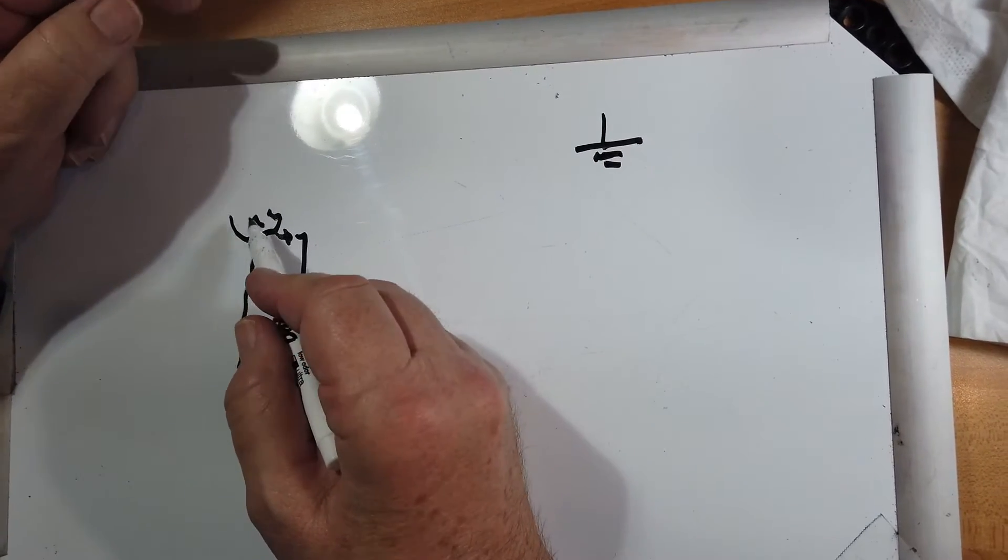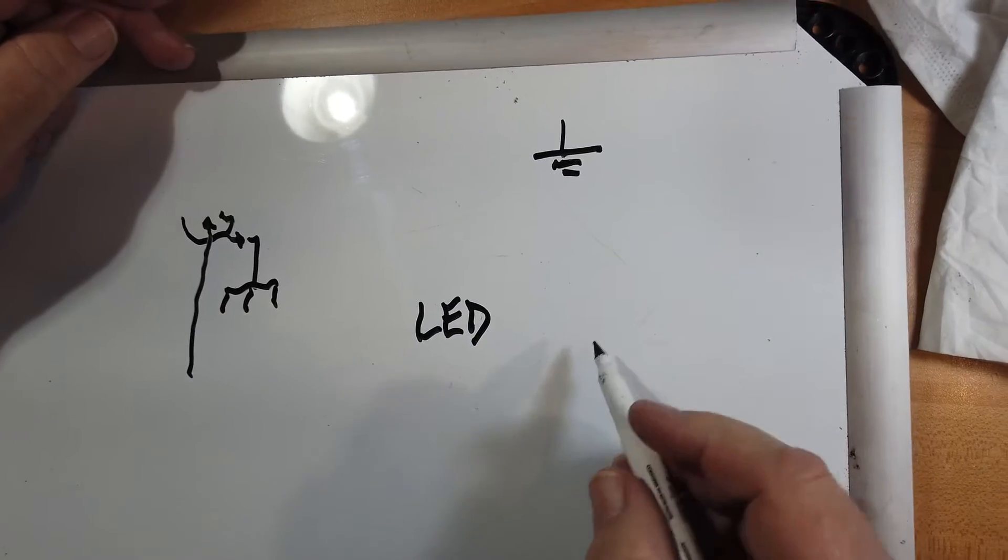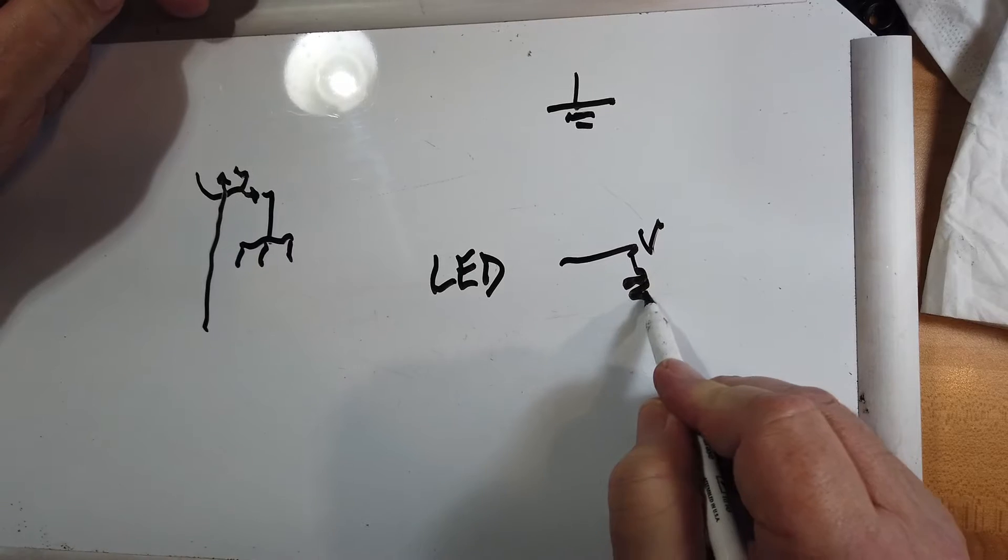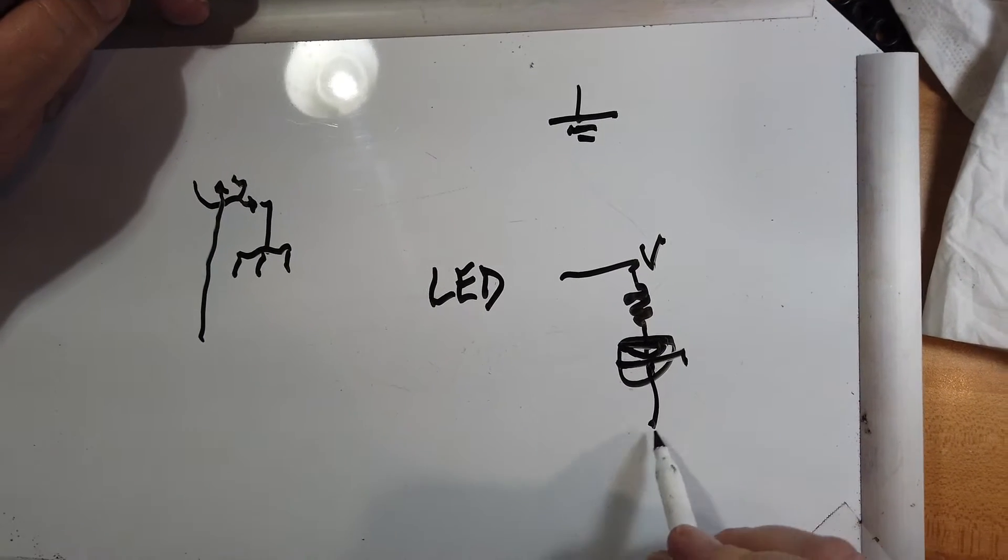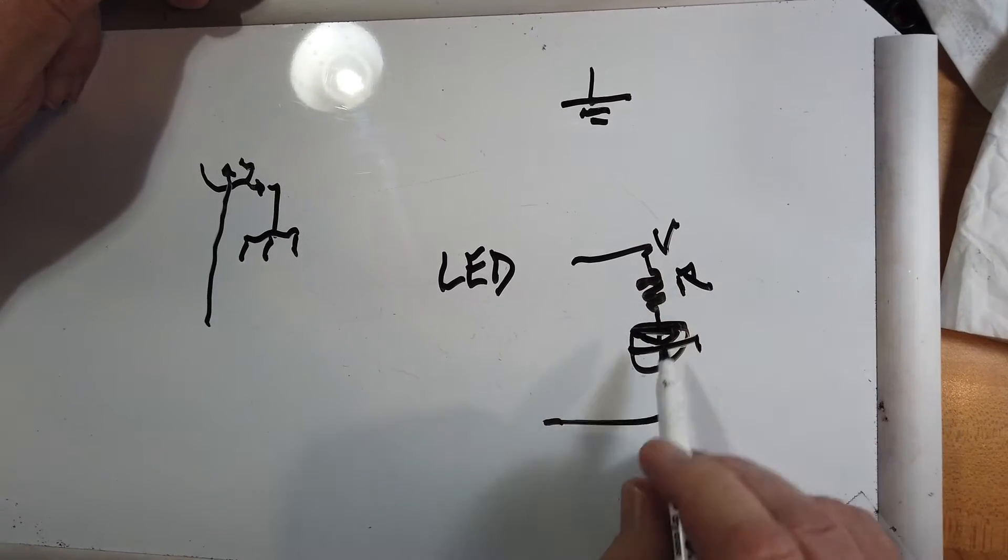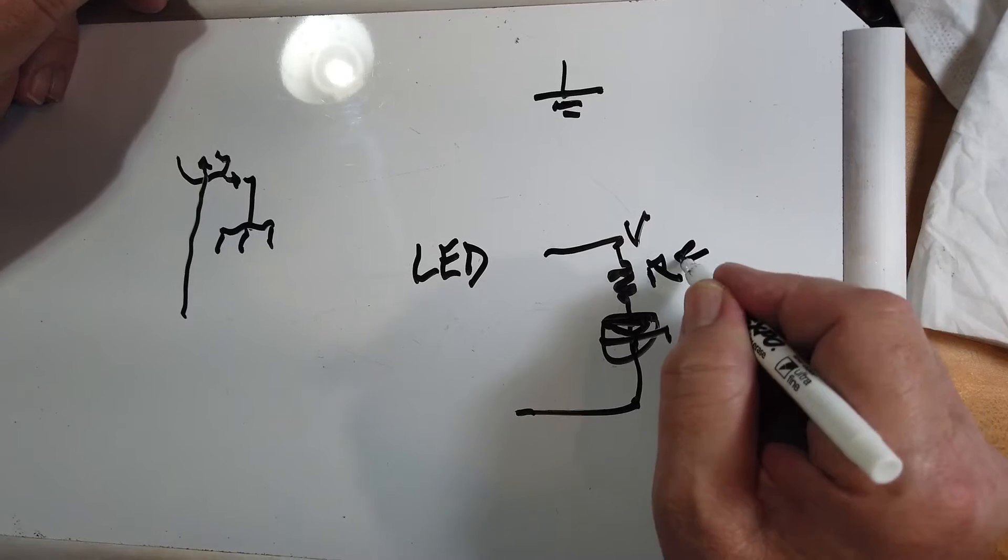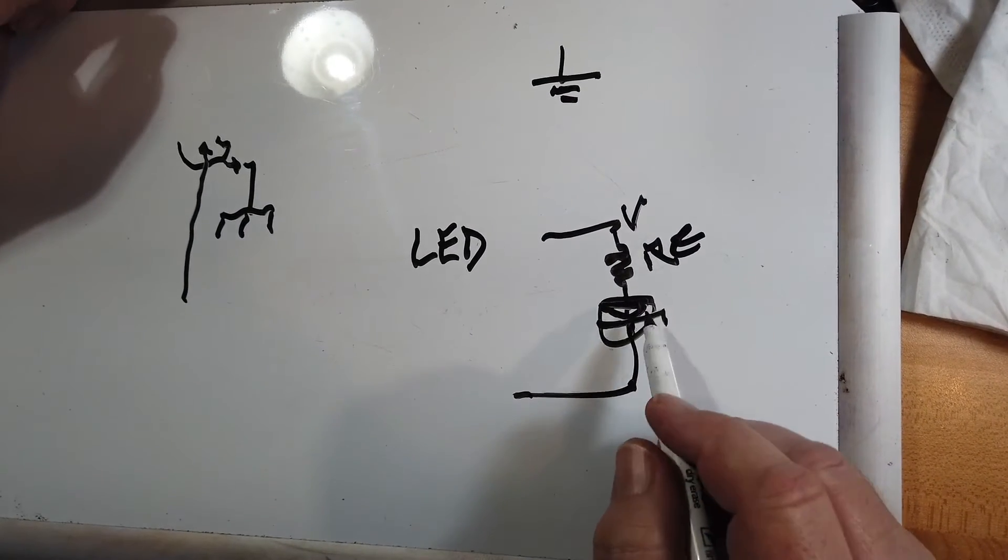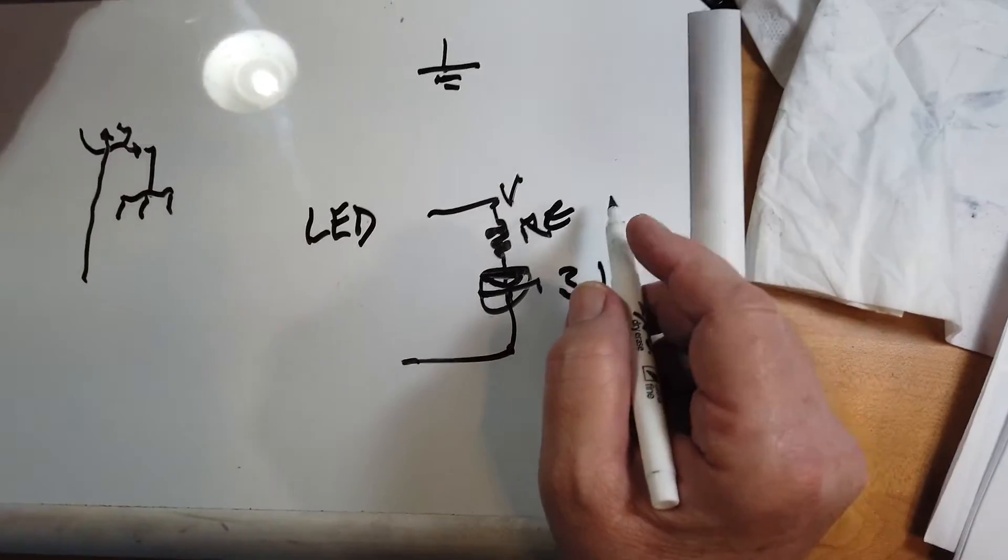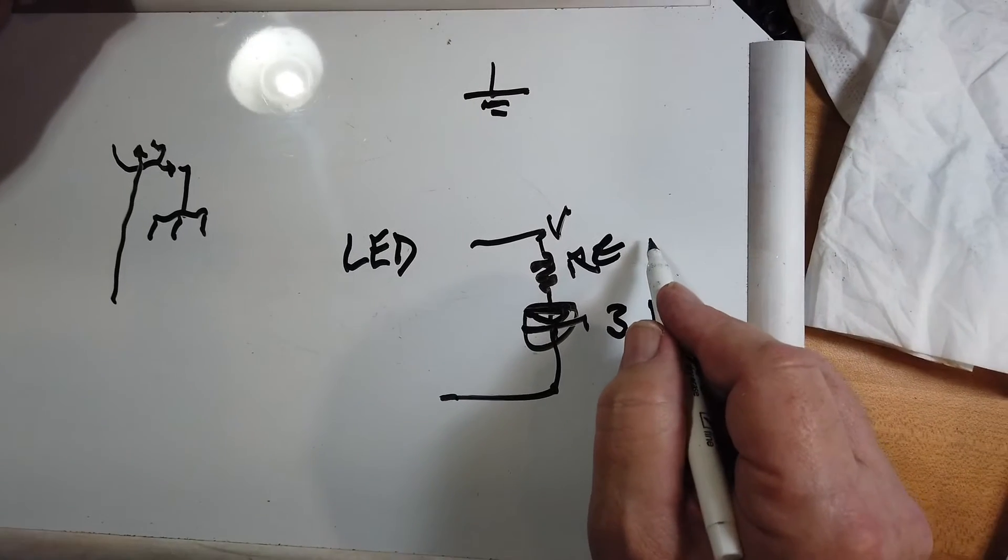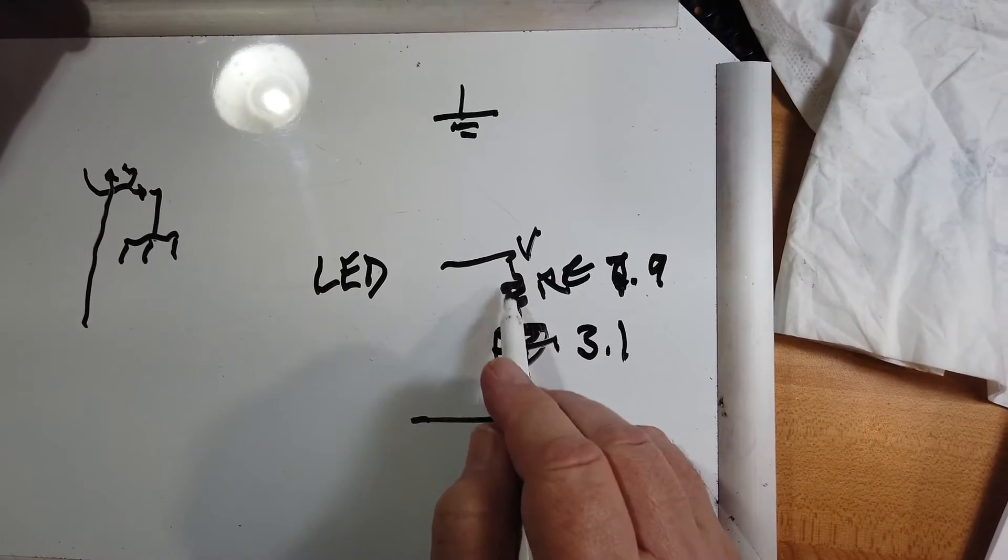So what the problem is, is that LEDs are current driven devices. One way you can do it with a voltage source is to put a current limiting resistor and then put the LED in here, and then back. And this resistor right here limits the current that flows into this. Well, now you've got a problem. More power is being used up in the resistor than is used up in the diode. Some of these LEDs have about 3.1 volts across them, which means if you come off of 12, you've got about 7.9 volts across the resistor. So you're going to lose more heat here.